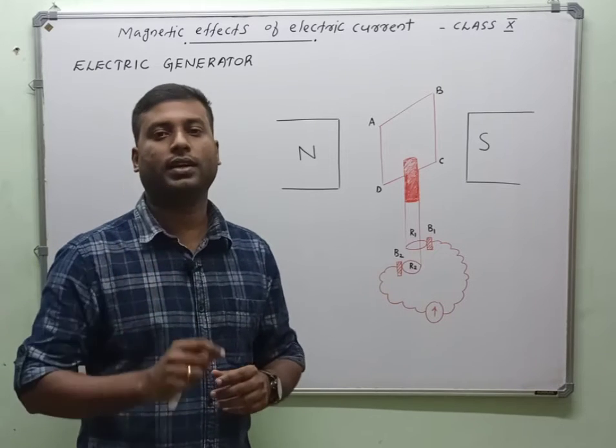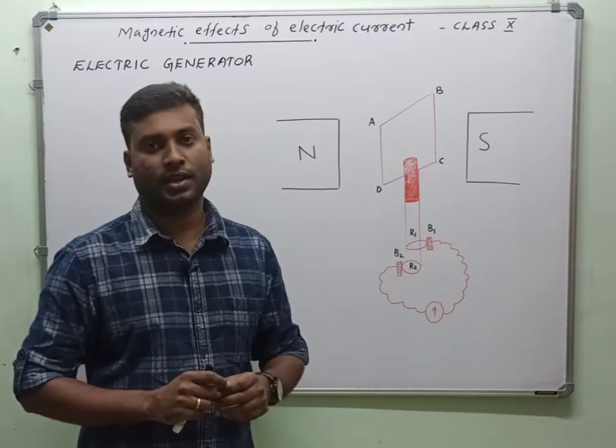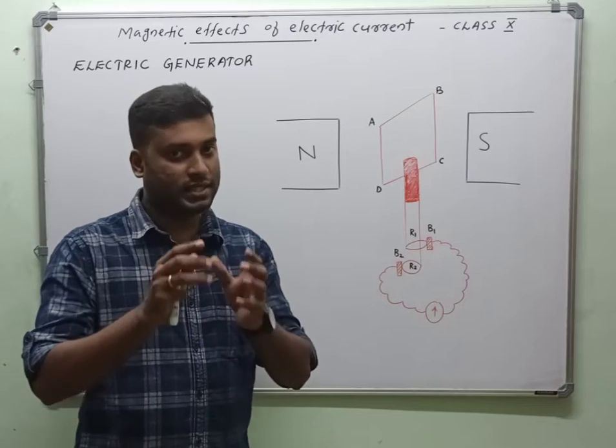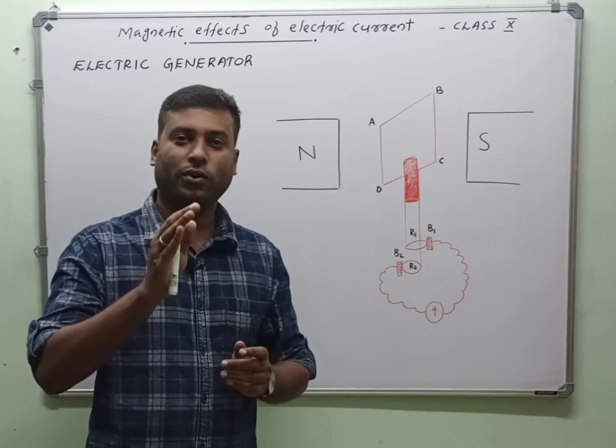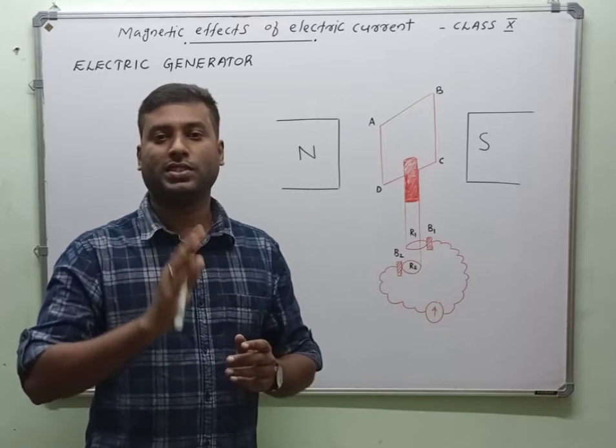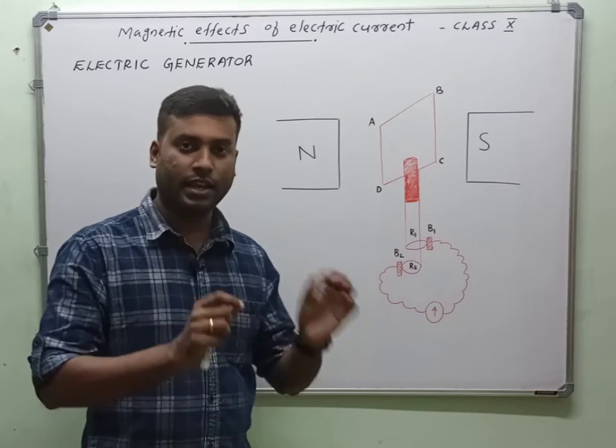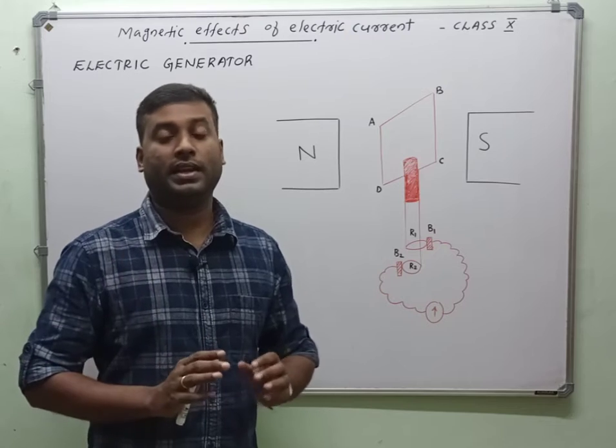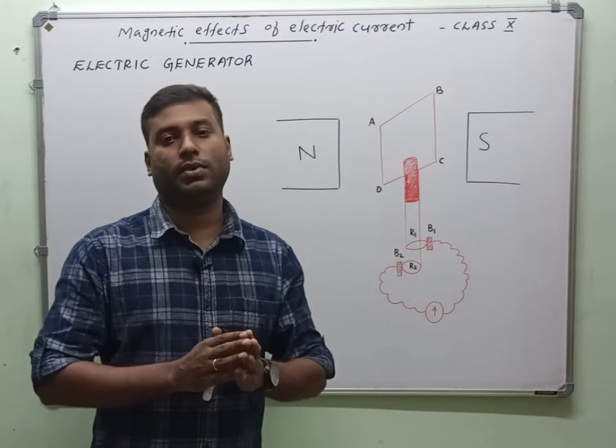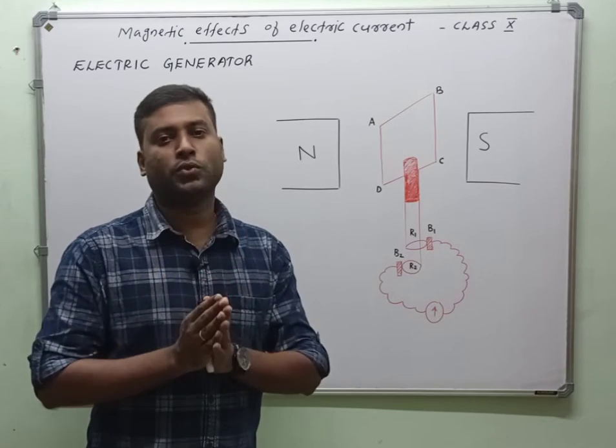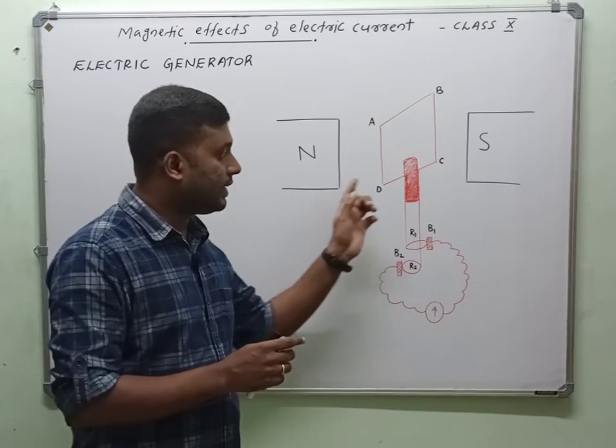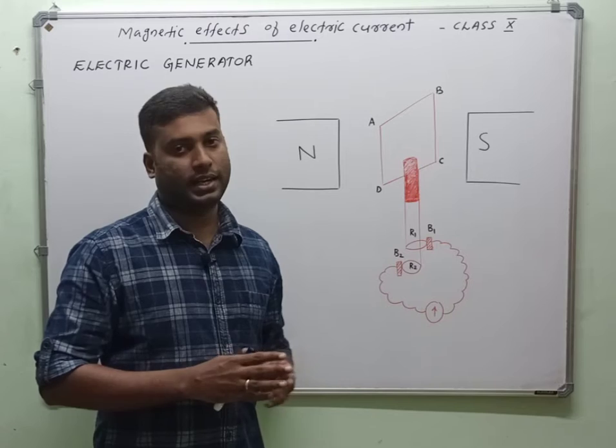And you have learned about electromagnetic induction. According to Faraday, you have seen that whenever the magnetic flux linked with a coil changes, an EMF is induced. And as part of this EMF, a current is also developed. That EMF is called induced EMF, and the current is called induced current. So using the same principle, this electric generator produces electrical energy.